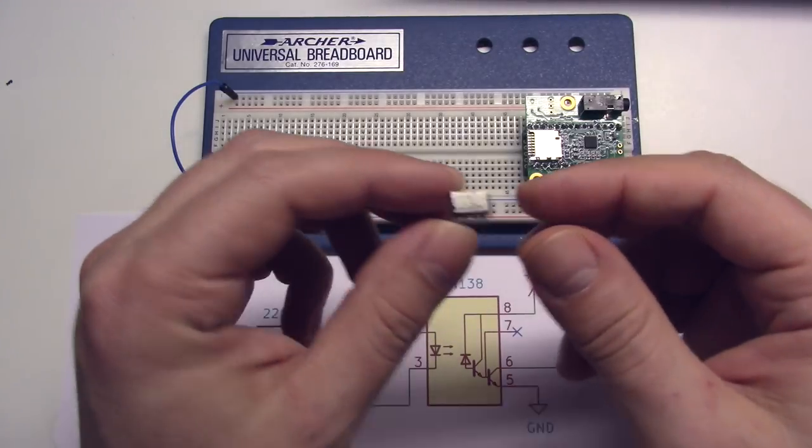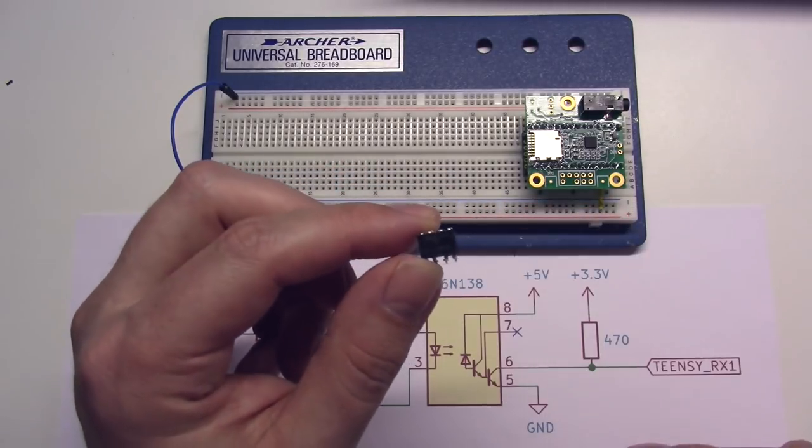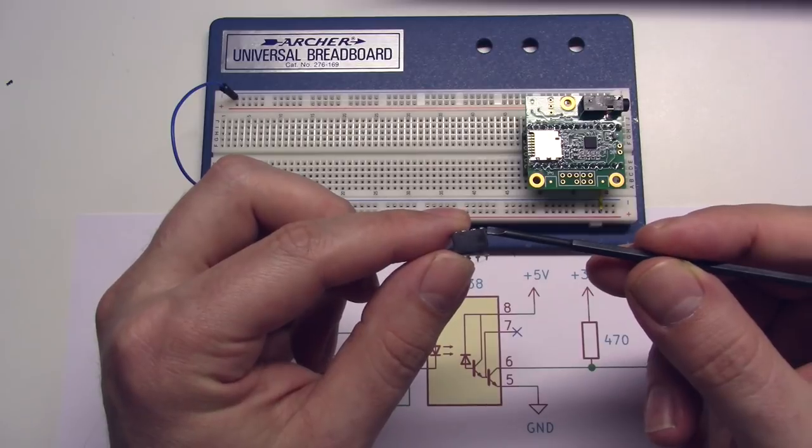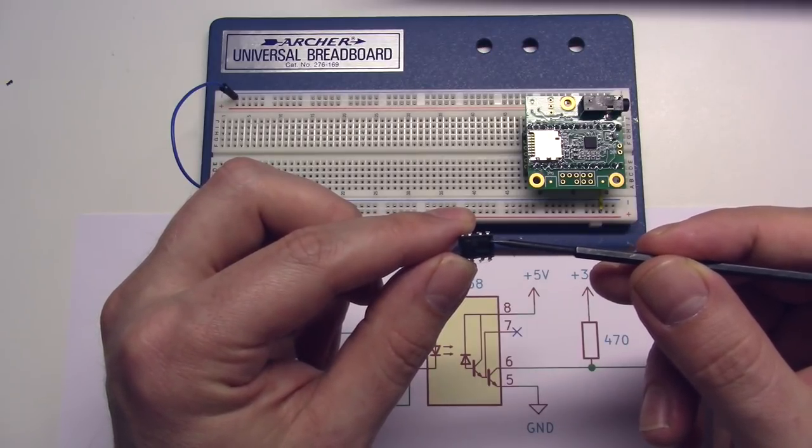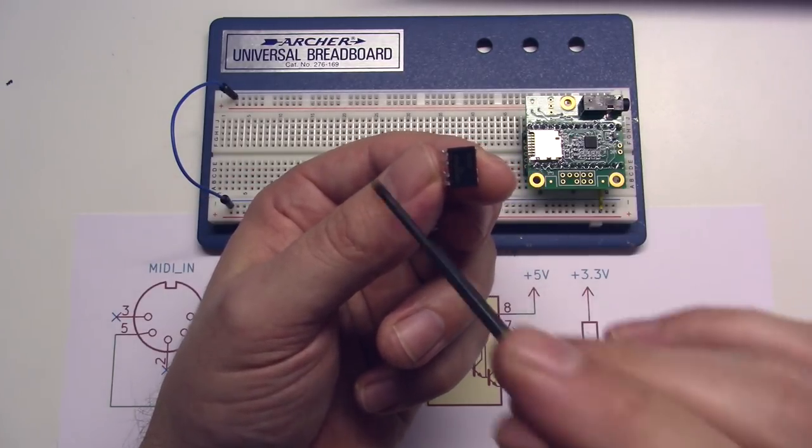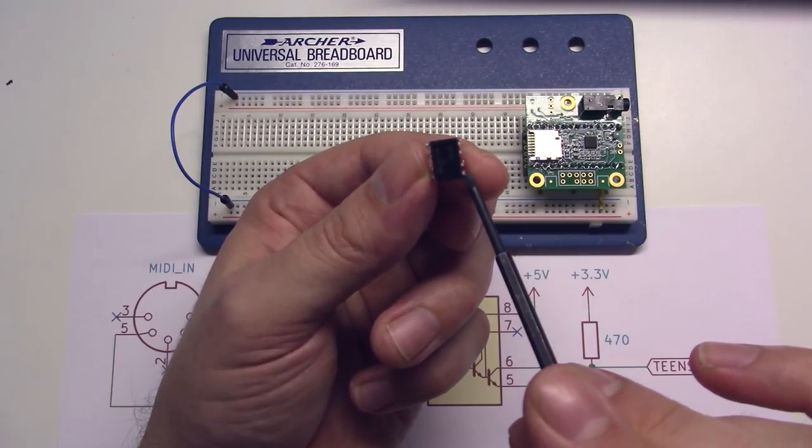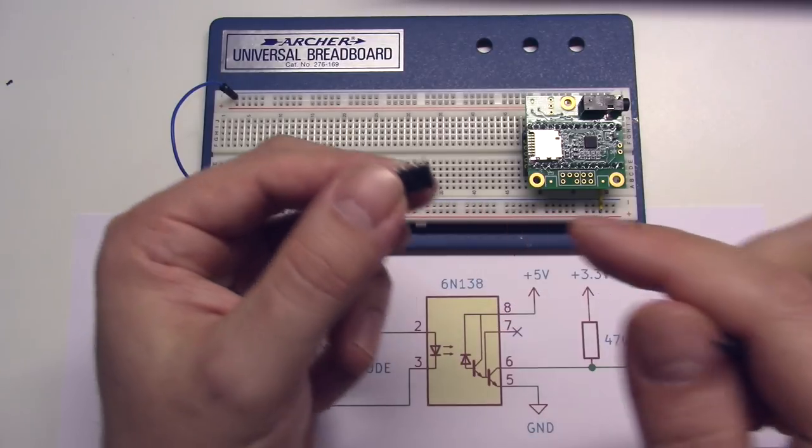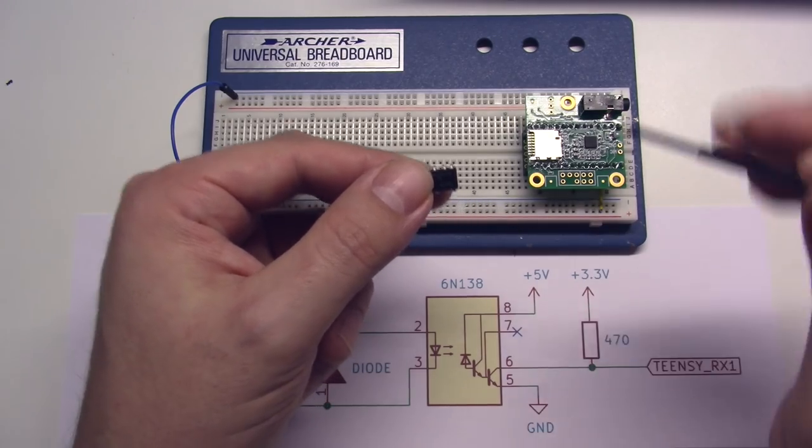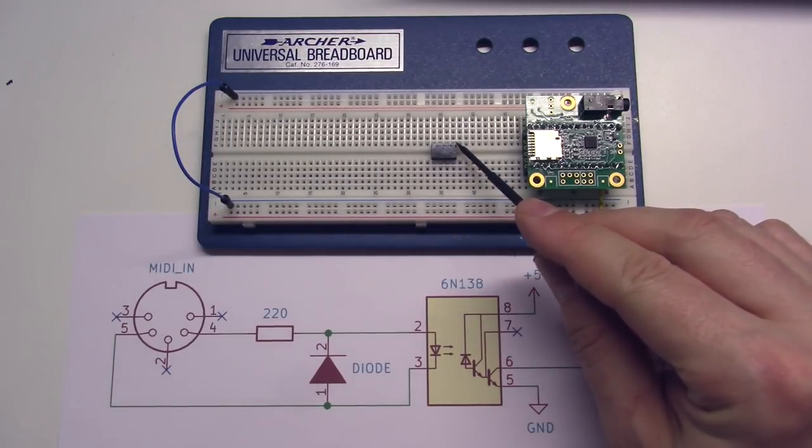Now we'll place our optocoupler on the board. The important thing when you're dealing with any kind of chip like this is you need to correctly identify the pins. Now if you look closely, there will be a little mark or a notch on one end of the chip, and here it is on this chip. So when you find the notch, the pins are numbered counter-clockwise from that notch. So here is pin one, two, three, four, five, six, seven, eight. So what we'll do is place the chip on the board with the pin one notch on this side. And there we go—there's the pin one notch.